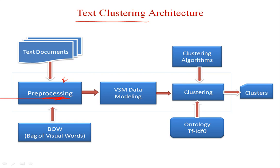After preprocessing, the next step is data representation — how to represent the data in the form of bag of words, identified phrases, bigrams, trigrams, etc. The next step is data modeling where we can use a model like the vector space model to represent the data. After that, we apply clustering algorithms. We can also apply measures like TF-IDF or ontology-based measures with clustering to improve the result, and it will give a set of clusters.